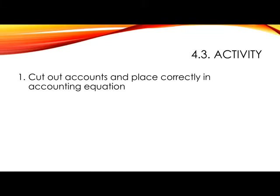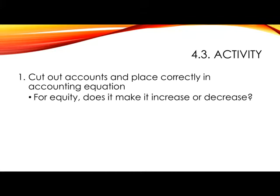Firstly, you need to cut out all the accounts on the pullout page and place them correctly in the accounting equation. Consider each account carefully to decide if it is an asset, an equity, or a liability, and then stick it in the correct box in the accounting equation. For equity items, you need to consider whether equity increases or decreases, and then show it either in the plus column or the minus column. If necessary, pause this video now in order to give yourself time to do so.